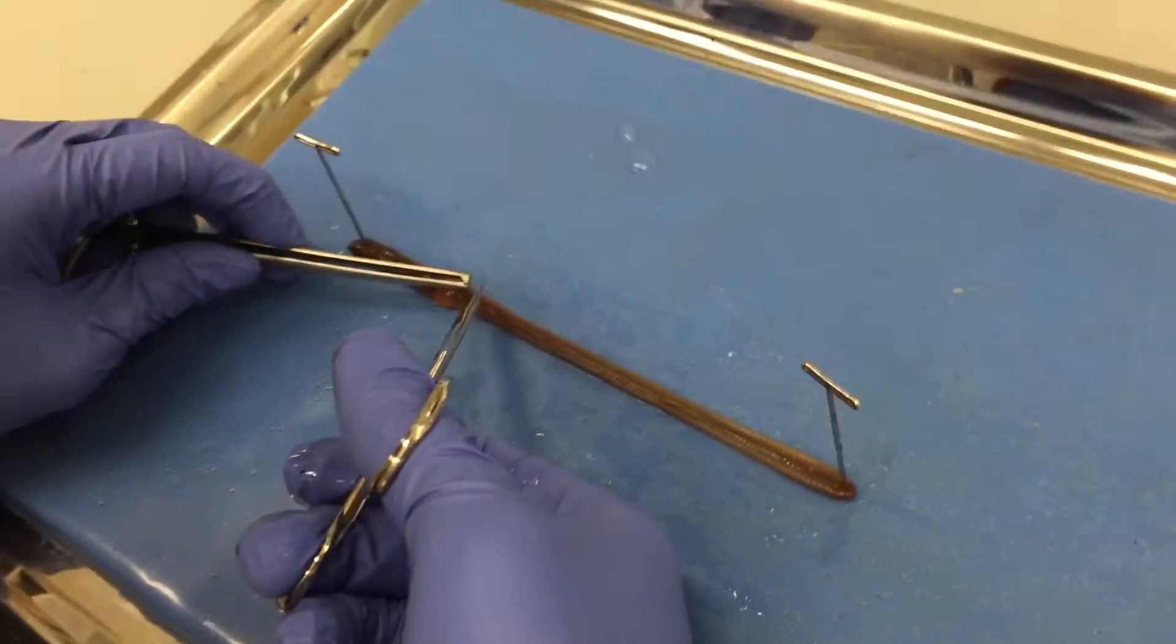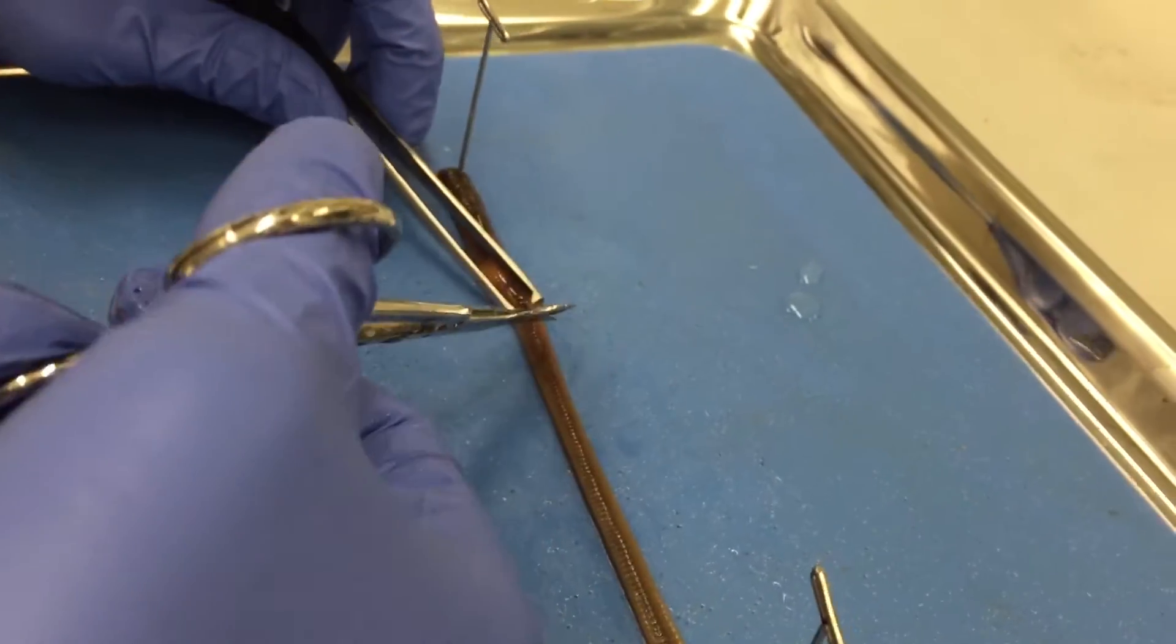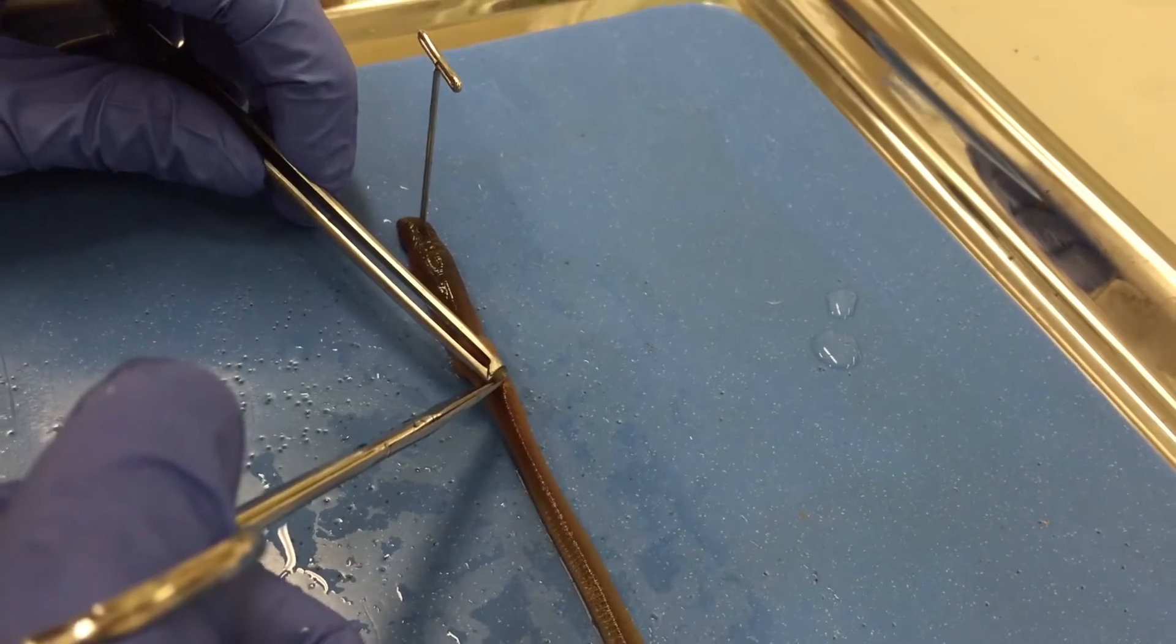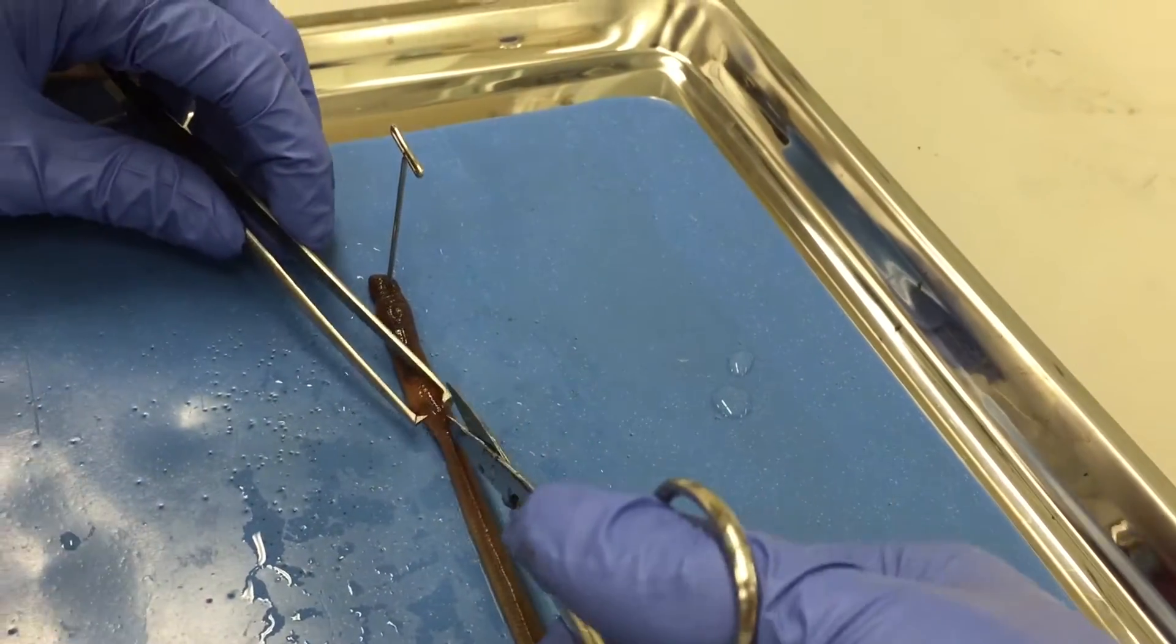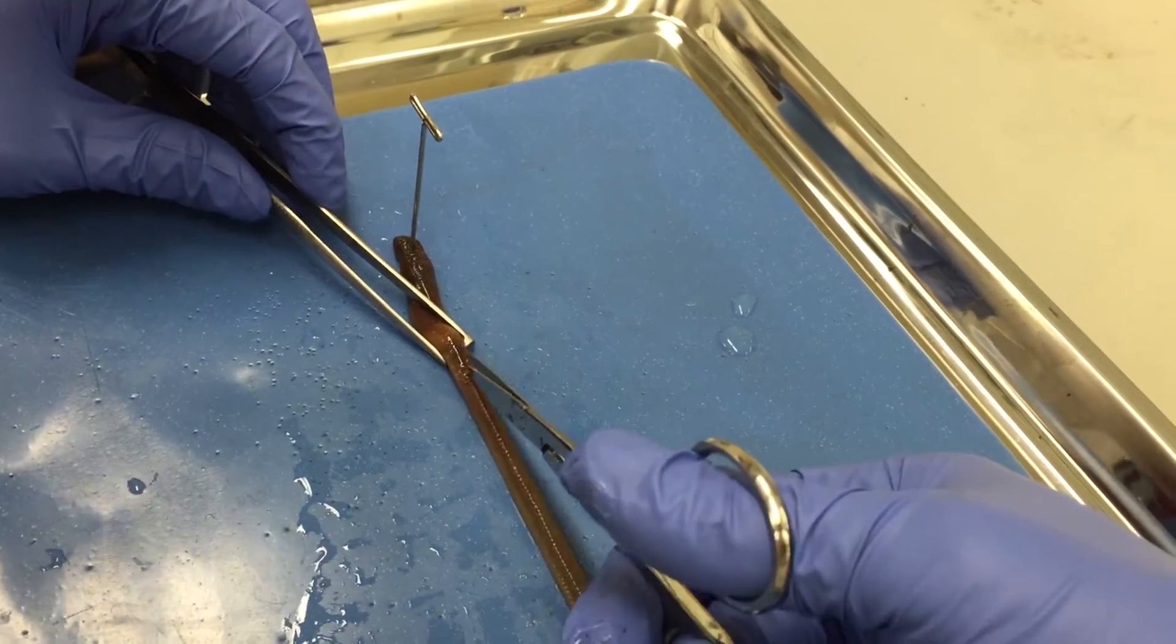Using the rat tooth forceps, carefully lift up just the skin below the clitellum and make an incision with the scissors, being mindful of not damaging any innards or the intestine.